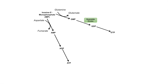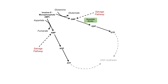AMP and GMP can also come from a different source — the purine salvage pathway, which I'll talk about in just a bit. Once you have ATP and GTP, they can be processed in a couple of steps and utilized for DNA synthesis.